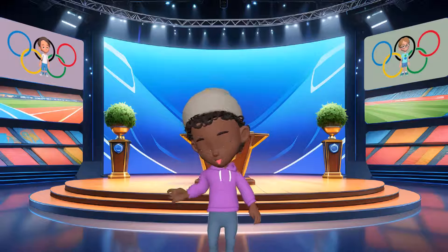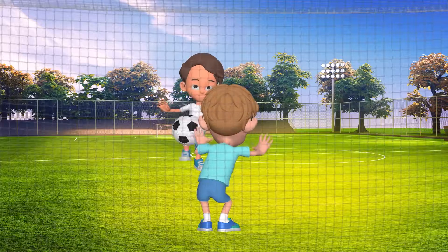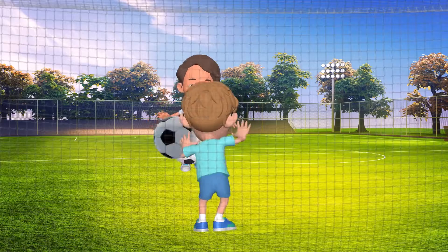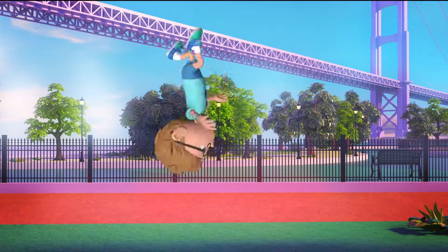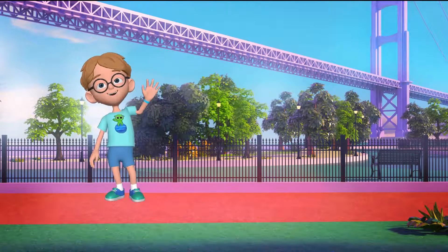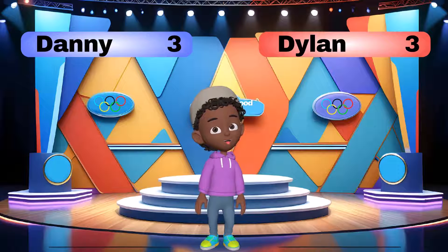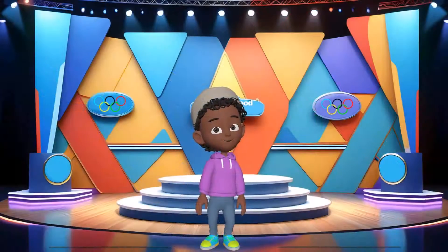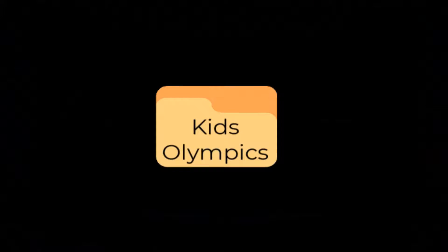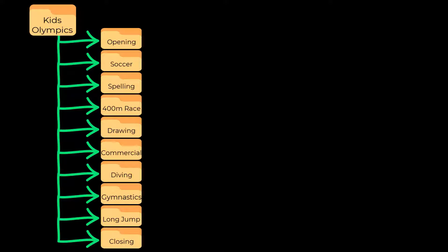Before I compare the results, let's understand the video project being compared. It is a short story about some neighborhood kids competing for a chance to go to Paris for the 2024 Olympics. The kids compete in multiple events such as soccer, racing, diving, long jump, and gymnastics, and the total duration of the story lasts four minutes. I had determined that there would be scenes for each sporting event, as well as a TV commentator for the opening and closing and a commercial in the middle, making it look like the neighborhood Olympics were being broadcast on television. The entire project existed in a folder called Kid Olympics with subfolders for opening, soccer, spelling, and all the other scenes.